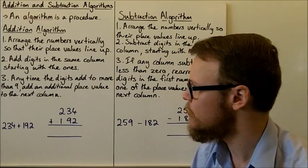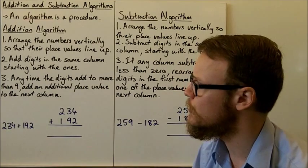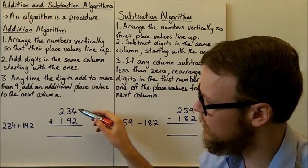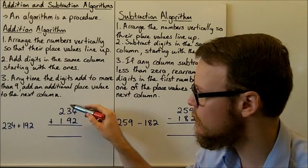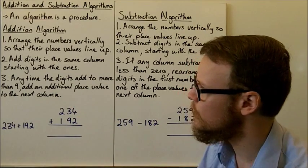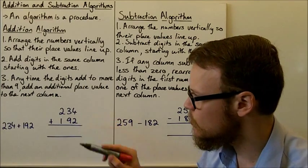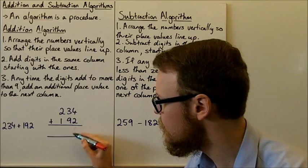So for our example here, we've got 234 plus 192. Firstly, I've arranged the numbers vertically and you can see their place values line up. The ones line up in this column, the tens line up in this column, the hundreds line up in this column. So firstly, we add the digits in the same column starting with the ones here. So the ones 4 plus 2 is equal to 6 there.